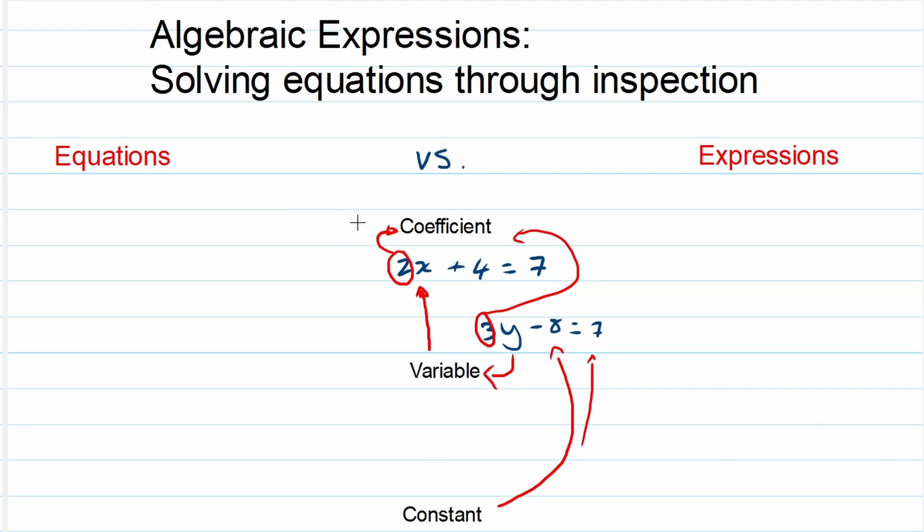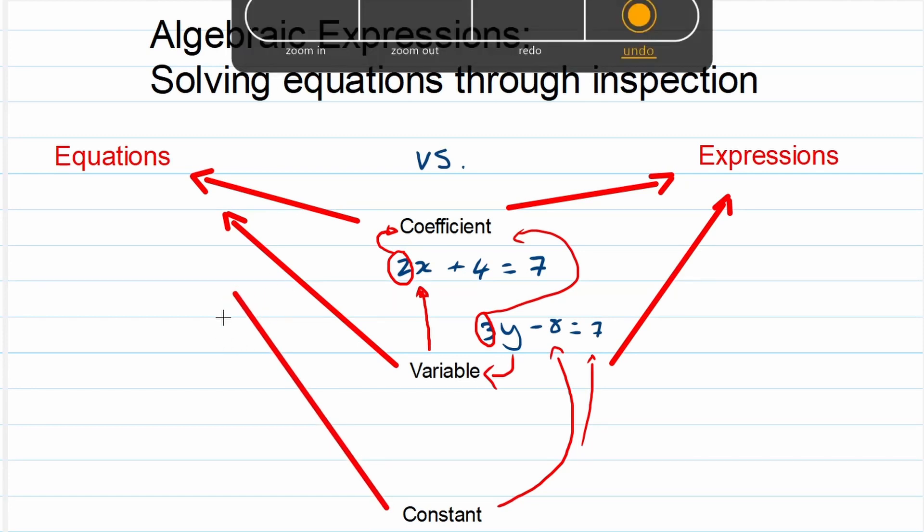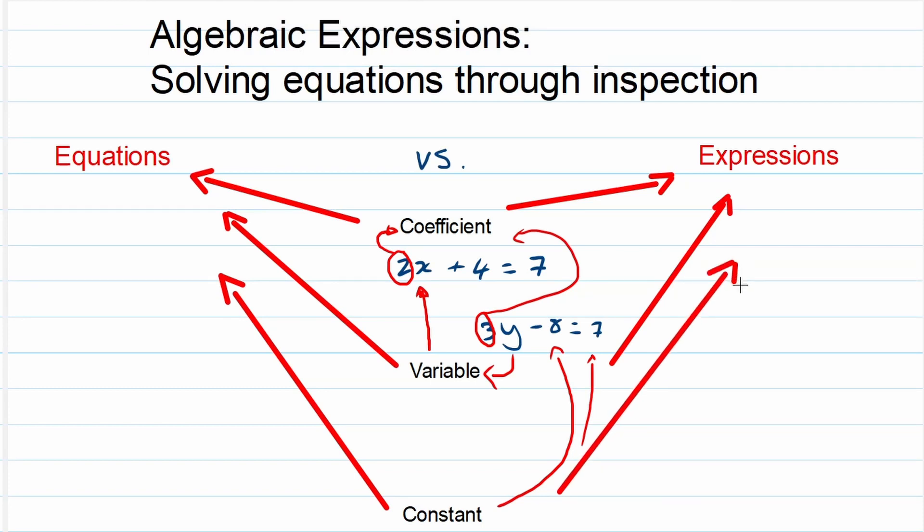But if you look at it, coefficients exist in equations. Coefficients exist in expressions. Variables exist in equations. Variables exist in expressions. Constants as well. In both of these. Constants exist in equations as well as in expressions. So the only real difference is.